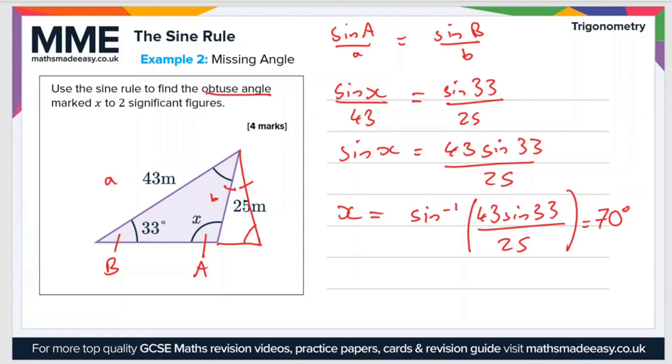then the angle we've actually found is this angle here. Now, that's not too much of an issue, because this is an isosceles triangle, and the two base angles are the same. The triangle we're dealing with is this one. If this angle here is 70 degrees, then this angle here is also 70 degrees.